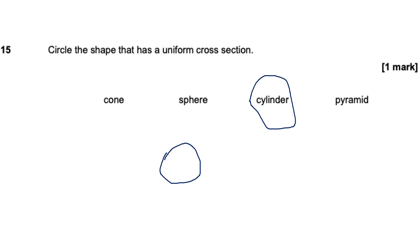A cone is going to be slightly different because it gives a different shape at each part. It can't be a sphere because it gives a different shape and a different size. And it can't be a pyramid because it gives a different cross-section each time. But the answer is a cylinder, because when I chop a cylinder it always gives me a circle.